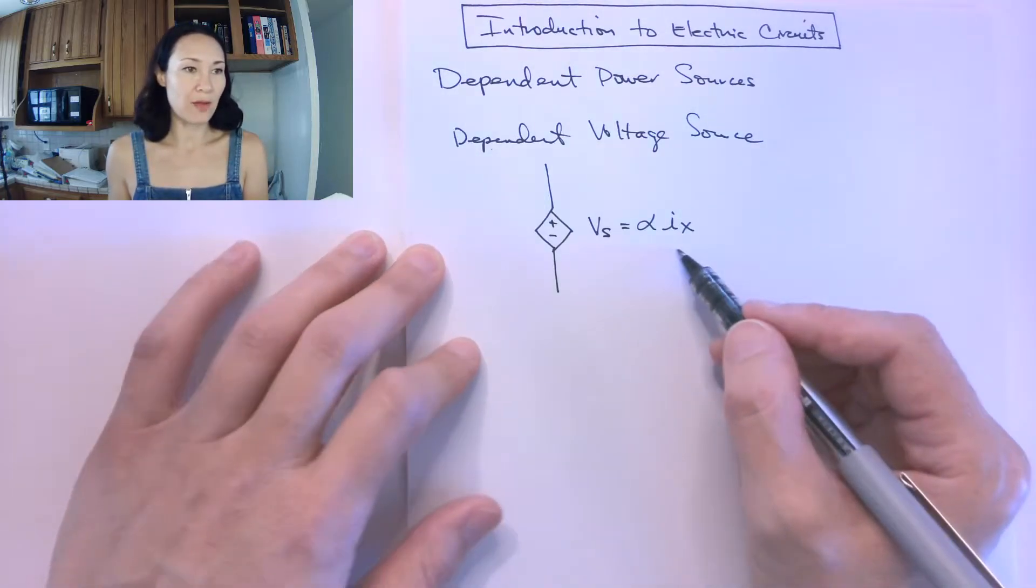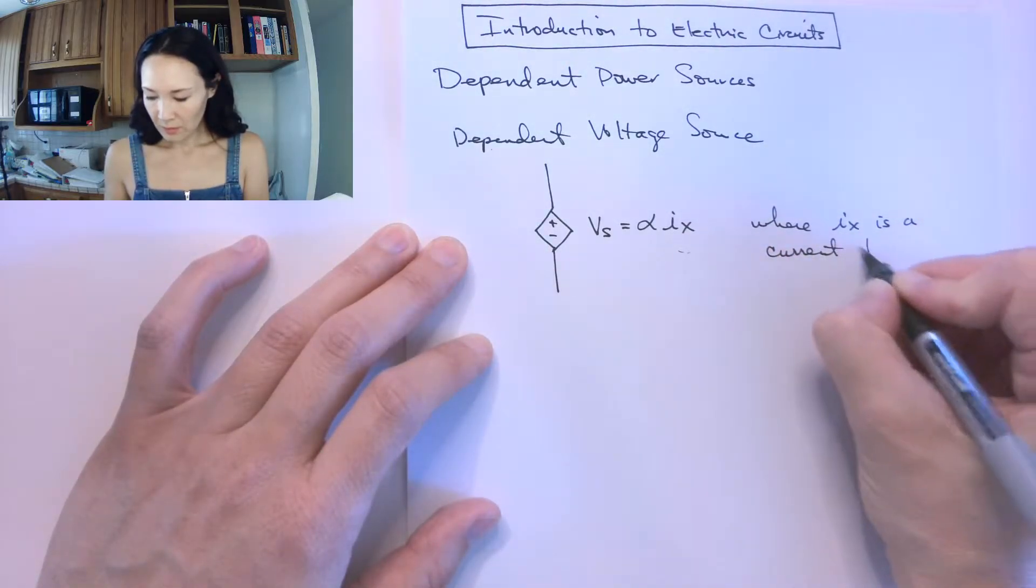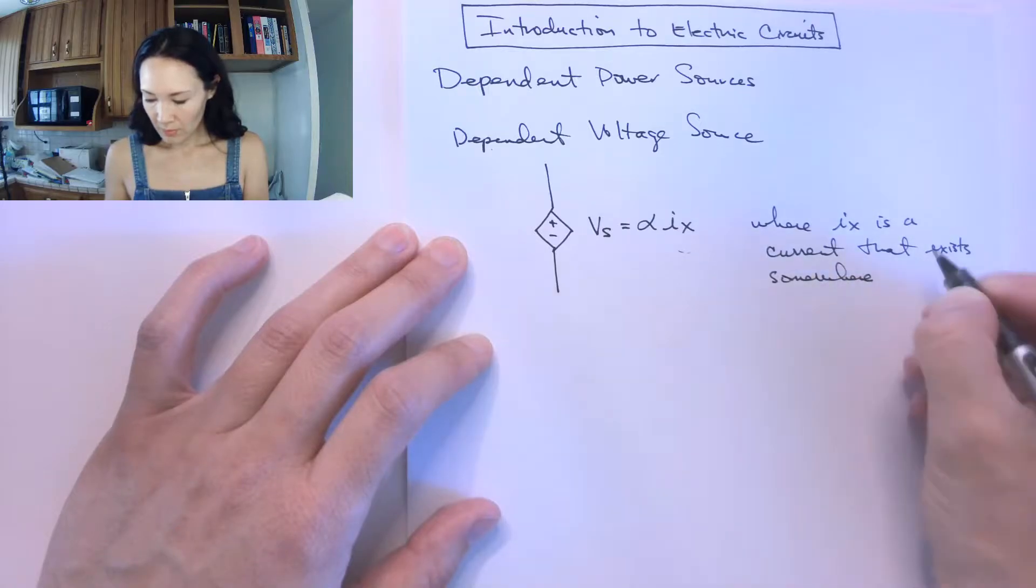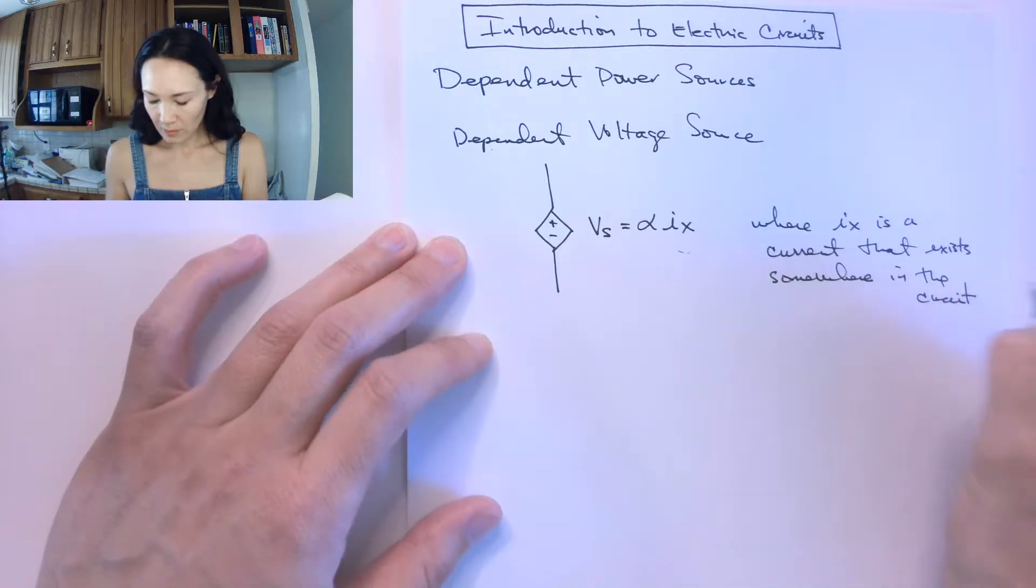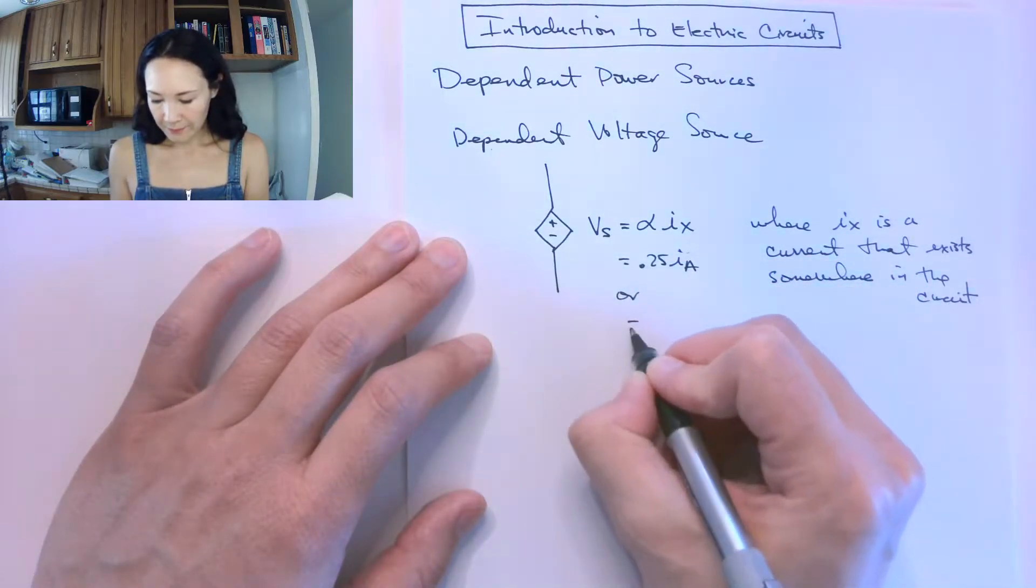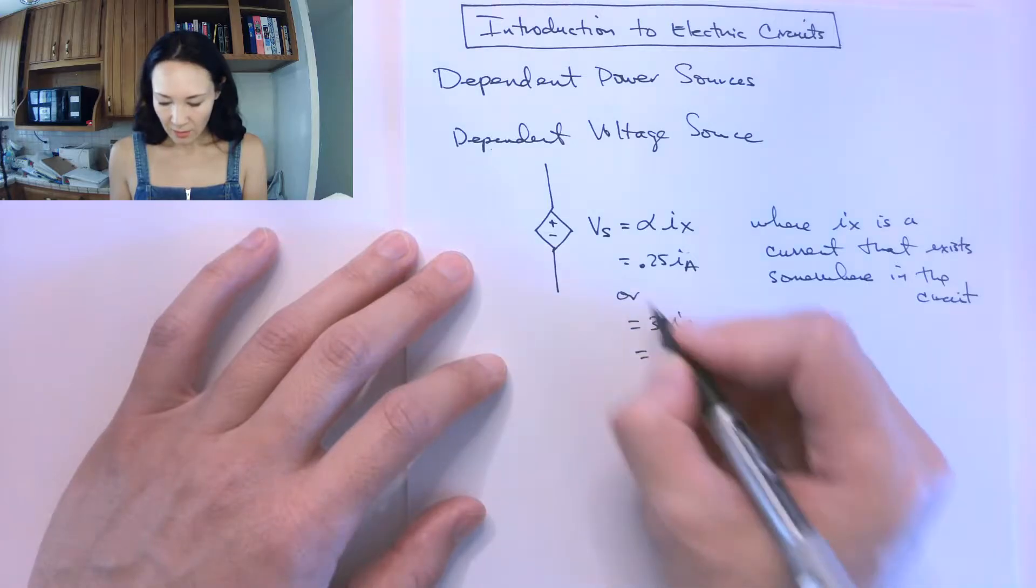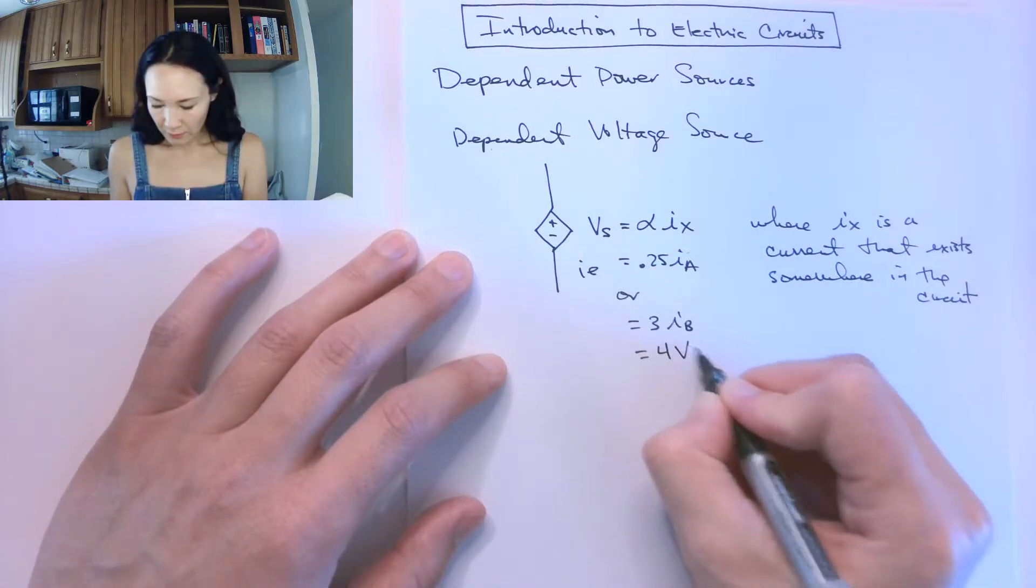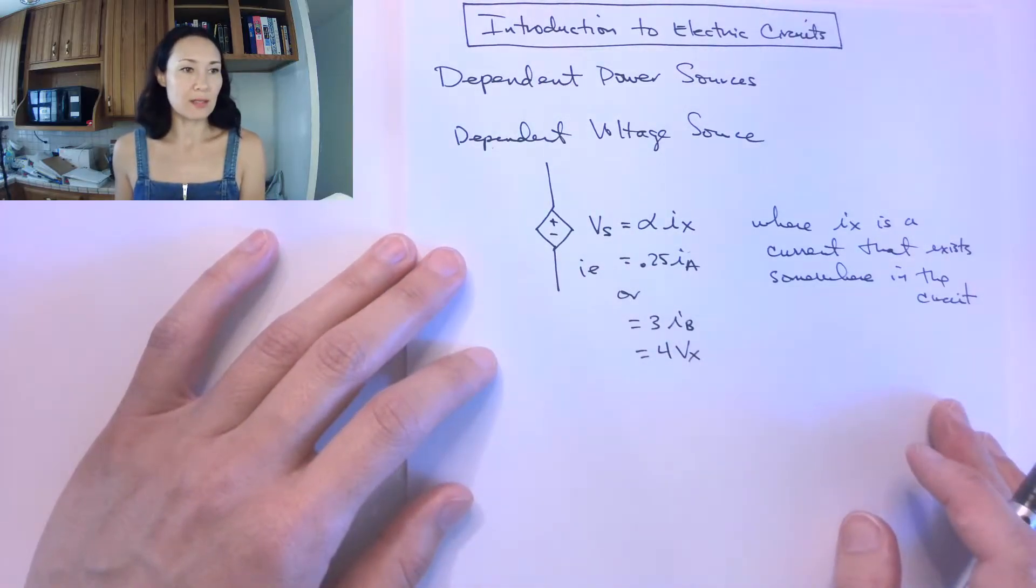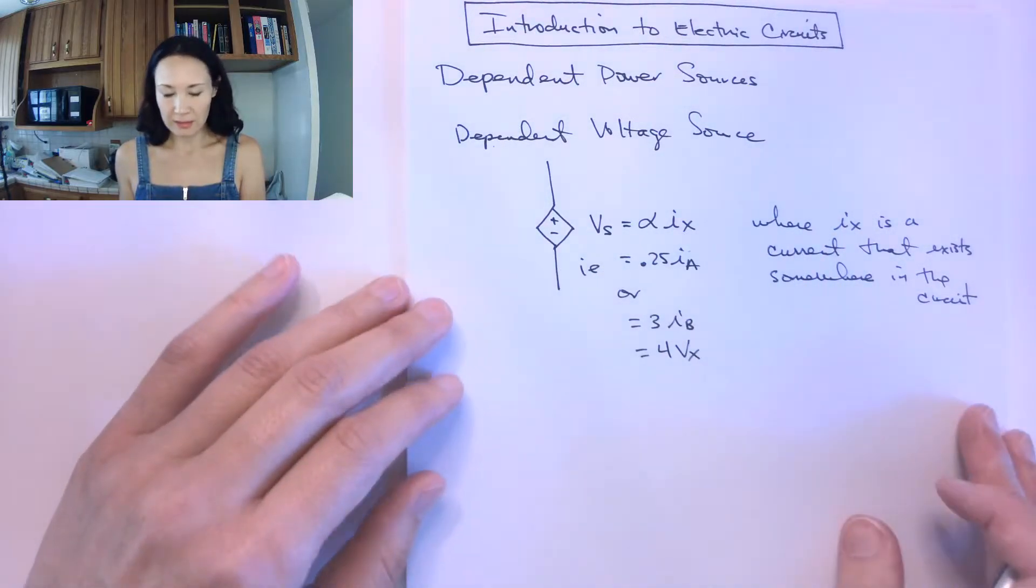This is just an example: a constant alpha times ix, where ix is a current that exists somewhere else in the circuit. You might see something like 0.25 times iA or 3 times iB. These could also be dependent on another voltage that exists somewhere in the circuit—it's basically a function of some other variable. You find that variable, multiply it by this constant, and then you can find how much voltage is supplied by this dependent voltage source.